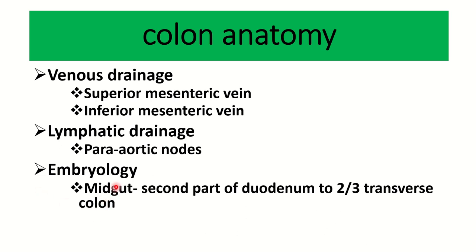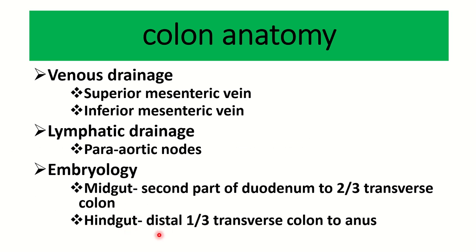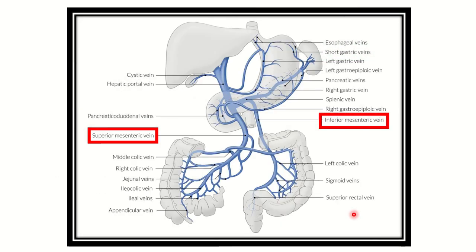Lymphatic drainage occurs in the para-aortic lymph nodes. Regarding embryology: the midgut extends from the second part of the duodenum to the right two-thirds of the transverse colon — that means the duodenum, jejunum, ileum, cecum, appendix, ascending colon, and up to the right two-thirds of the transverse colon are derived from the primitive midgut. The hindgut extends from the distal one-third of the transverse colon to the anus.